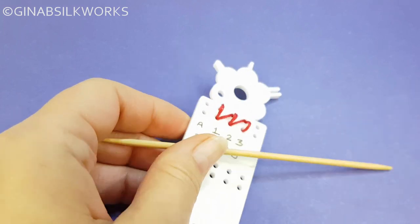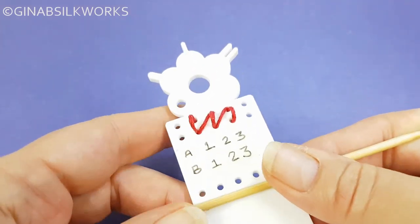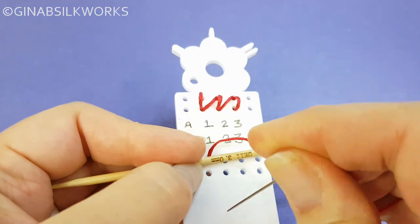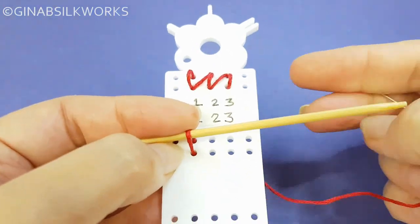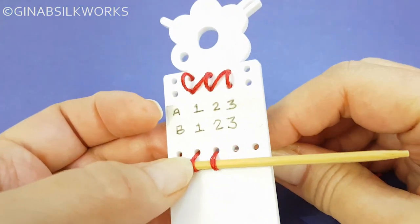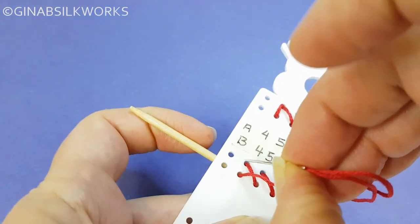So now we need to repeat for the bottom. At this point, you can use any needle that you want. The point is you just need to make sure that it'll go through the hole comfortably. So straight stitches on one side, turn over, and straight stitches on the other side.